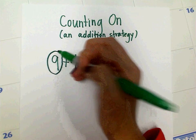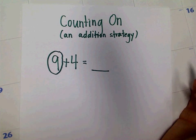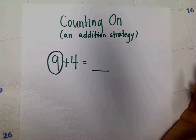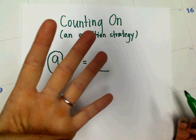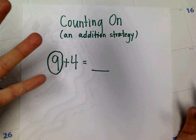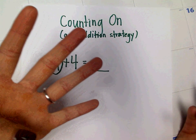I'm going to put 9 in my head and say 9 as I tap my forehead. And then I'm going to count on 4. I can do this with my fingers or I can draw dots. I'm going to first show you with my fingers.